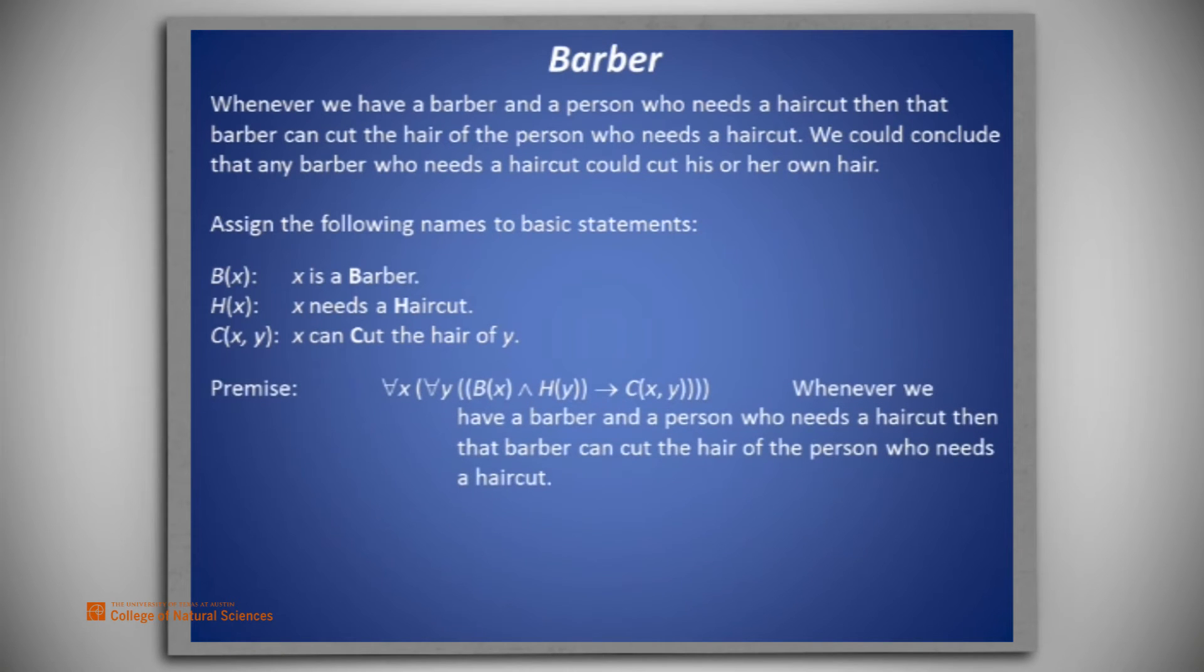From the story and these predicates, we may represent the premise as for all X, for all Y, if B of X and H of Y, then C of X and Y. In English, that is, whenever we have a barber and a person who needs a haircut, then that barber can cut the hair of the person who needs a haircut.